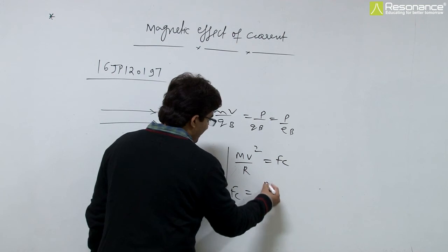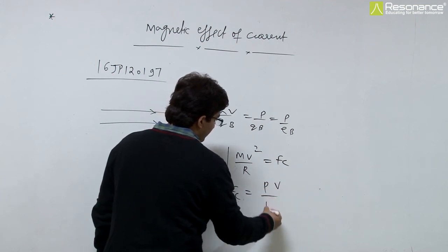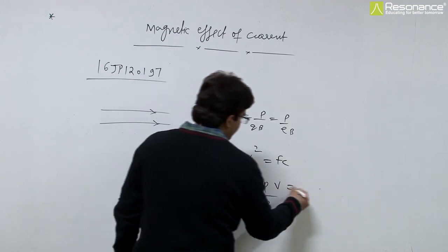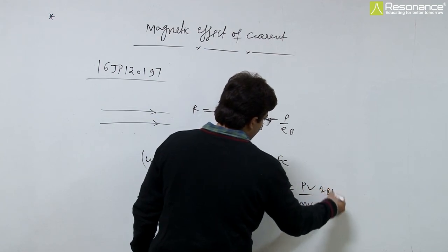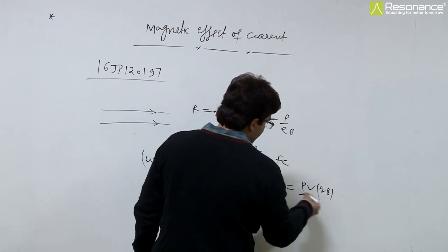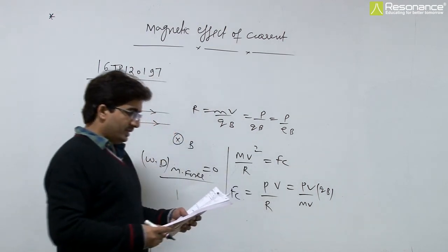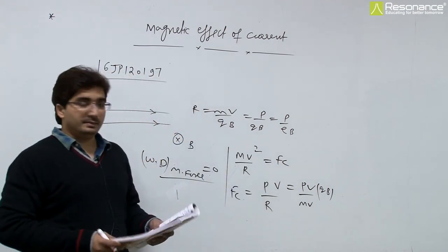Replacing mv with p gives pv by r. Since r equals mv by qv, we can substitute and simplify. Canceling terms gives p by mqv. The given option m by p is correct.